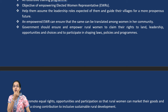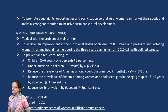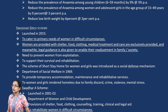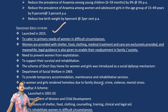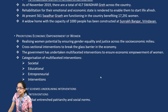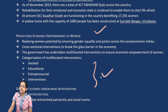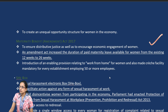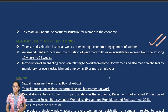Mahila E-Haat is an online digital platform through which trading has been promoted. Empowering elected women representatives in panchayats ensures at least one-third women representatives. The National Nutrition Mission focuses on reducing malnutrition and providing better diets. Swadhar Greh meets the needs of women in difficult situations through shelter, food, clothing, and medical facilities. Prioritizing economic development — whether societal, educational, entrepreneurship-based, or interventionist — is important.